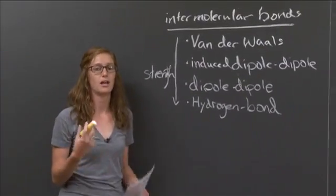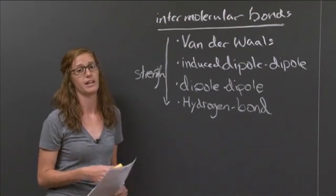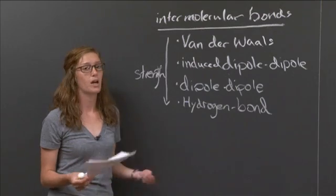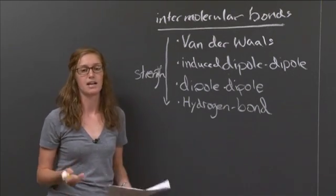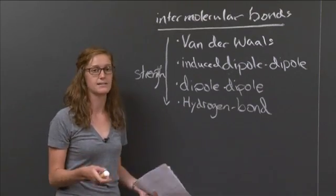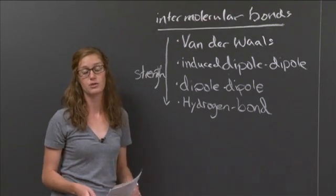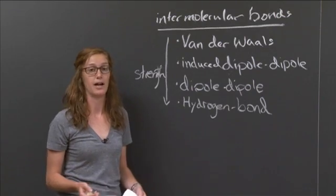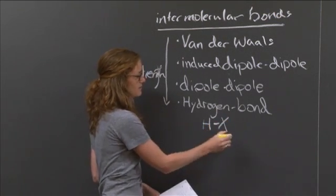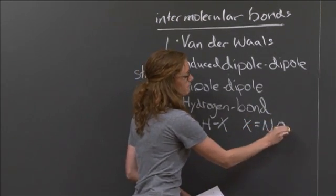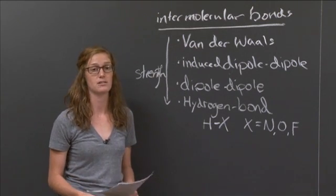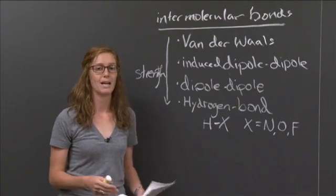Van der Waals is an induced dipole-dipole interaction — although your atom or molecule does not have a net dipole, the electrons can shift and at some point will cause a difference in polarity between different sides of the molecule. Induced dipole-dipole involves two different molecules interacting, one that has no net dipole and one that does. Dipole-dipole is pretty self-explanatory: two molecules that have dipoles interacting. And then hydrogen bond is when you have hydrogen bonded with X, where X is nitrogen, oxygen, or fluorine. We call that a hydrogen bond because these are really strong dipole-dipole interactions that cause much different behaviors in molecules.